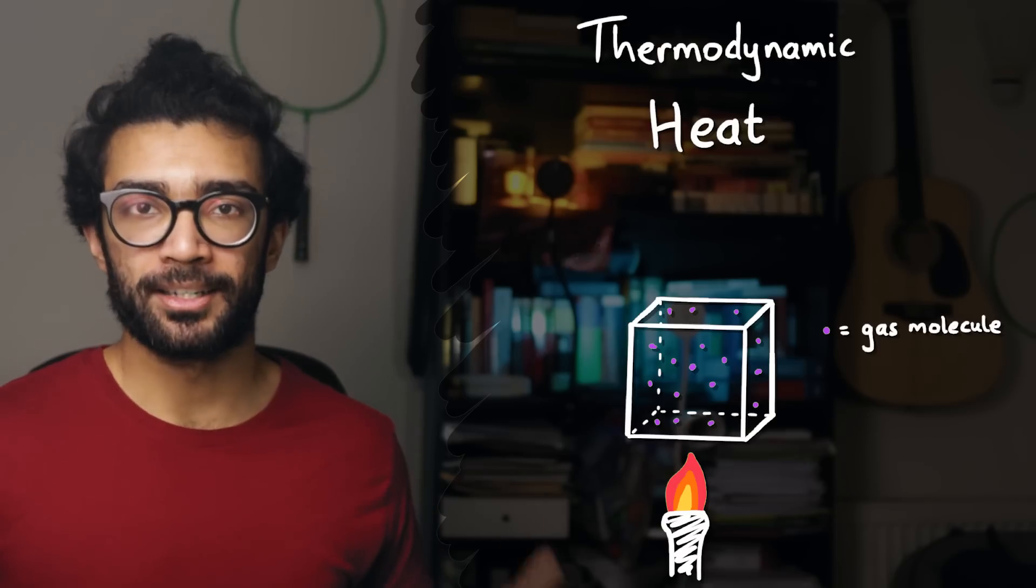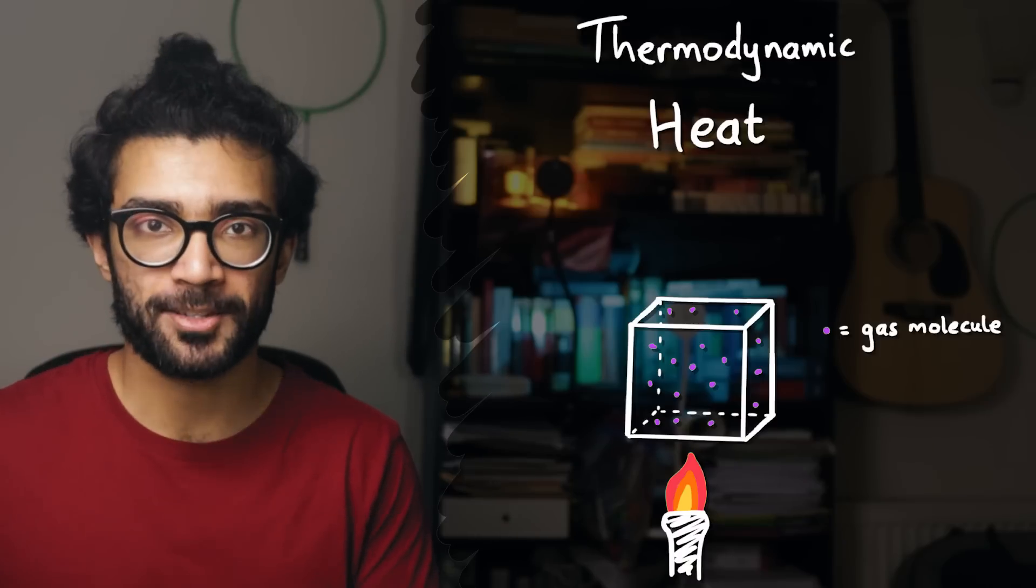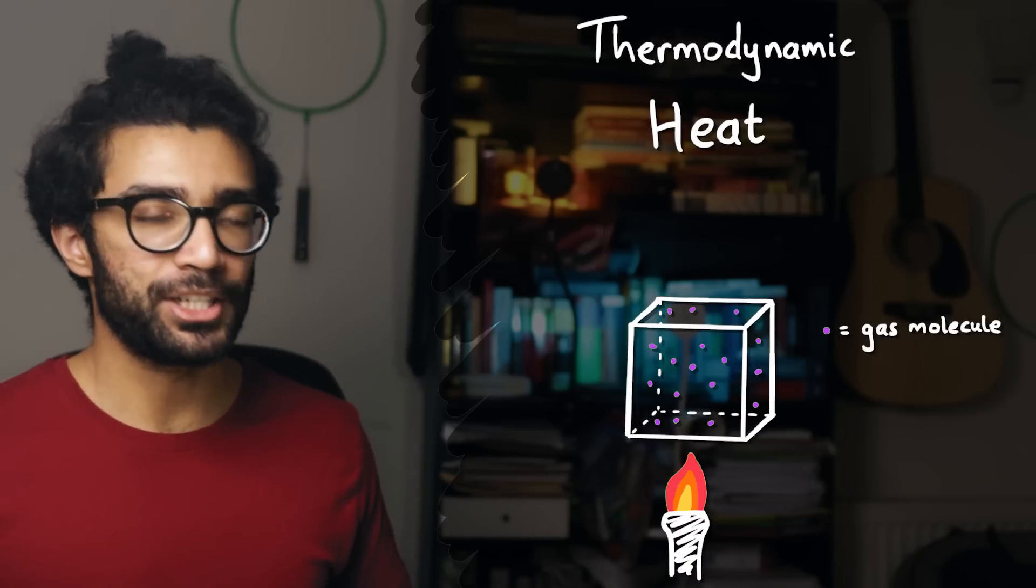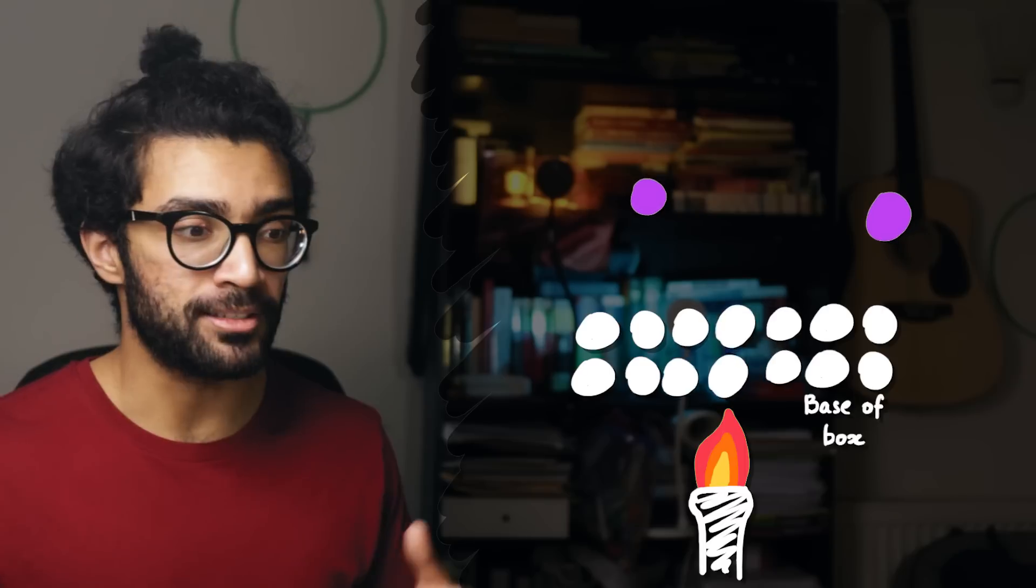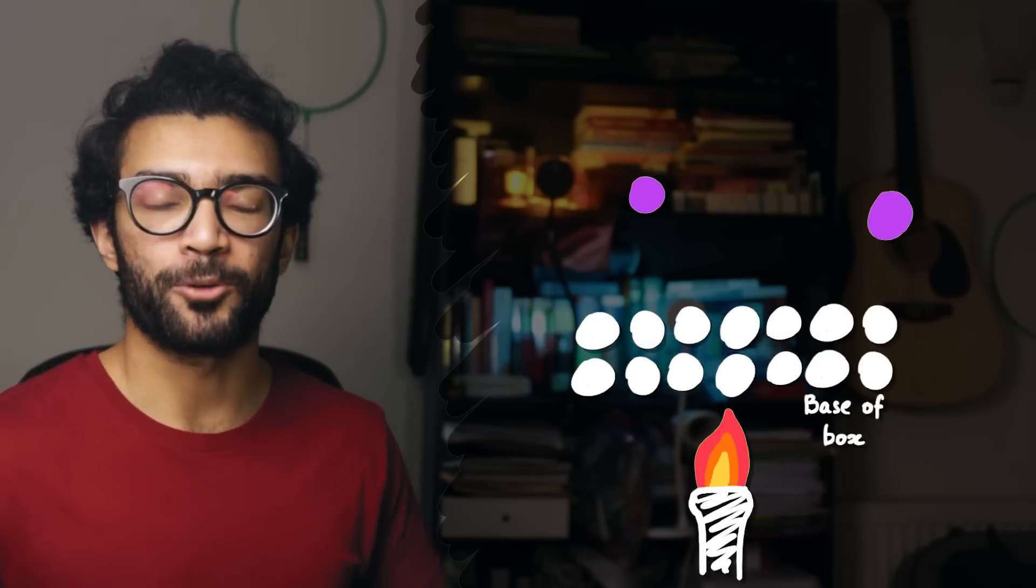For example, I could stick a Bunsen burner underneath our box which contains our gas. This would result in a transfer of energy to the base of the box due to the increased jiggling of atoms making up the base. And eventually, gas particles that collide with the base of the box would take this energy away with them. They would increase their jiggling as well.